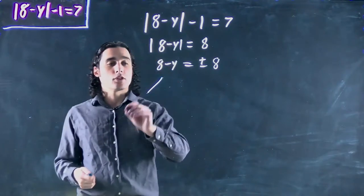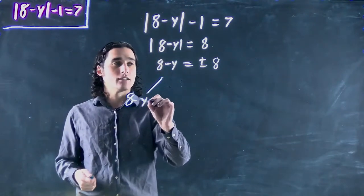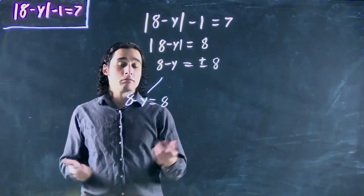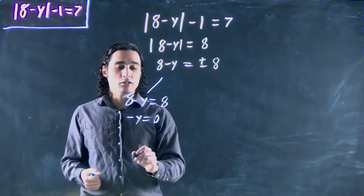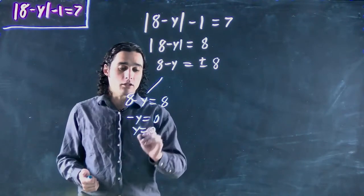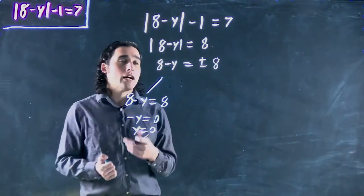So first I'll look at 8 minus y equals positive 8. Well, I'm actually going to get minus y equals 0 or y equals 0, which is okay. That's a viable solution.